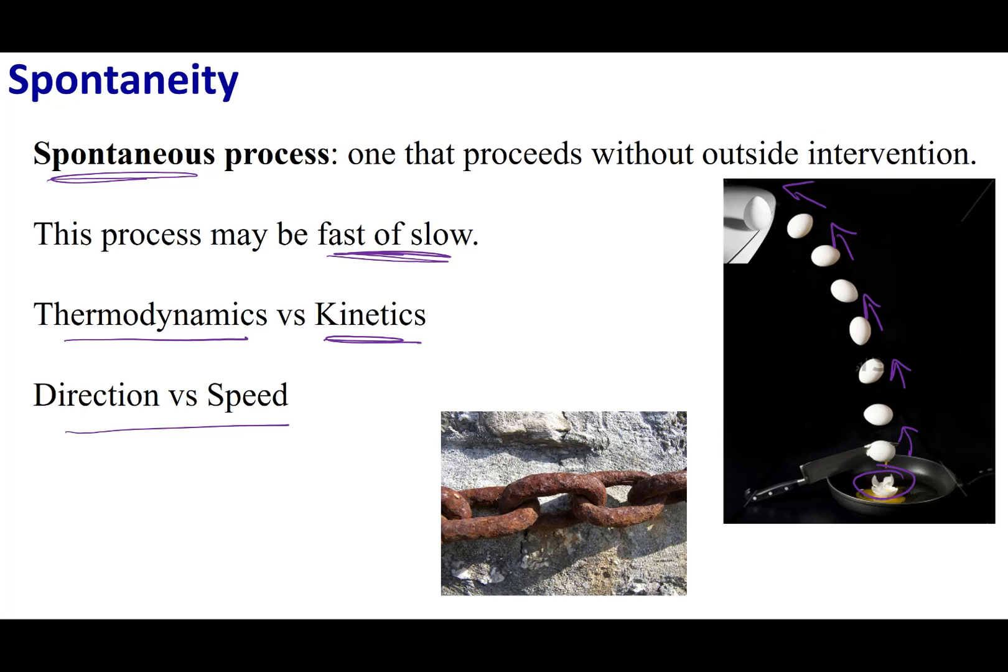Now, to give you an example, one thing I can do is I can take an iron chain, I can leave it outside and what will spontaneously happen is that iron chain will start to rust. This might be a slow process that might take years, decades, centuries, but it will still proceed in that direction of the chain rusting. What won't happen in our universe is that I can't take a pile of rust, become an iron chain.